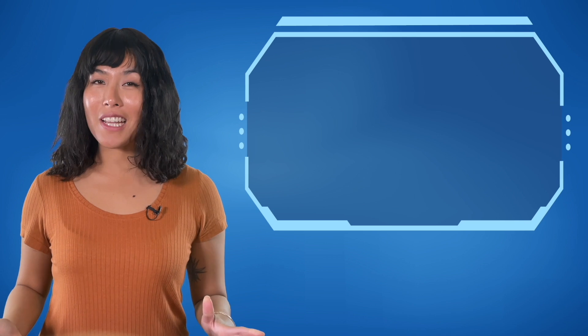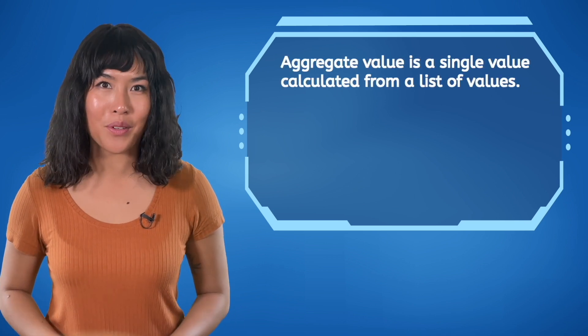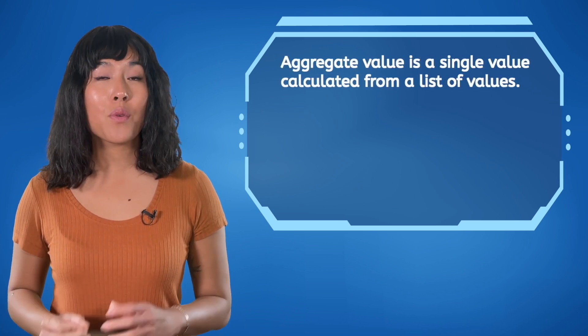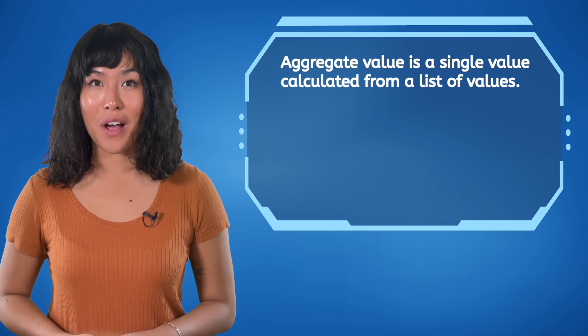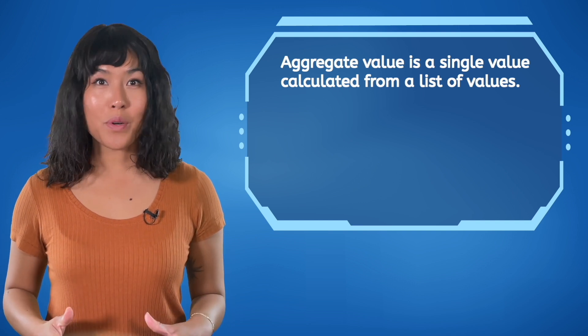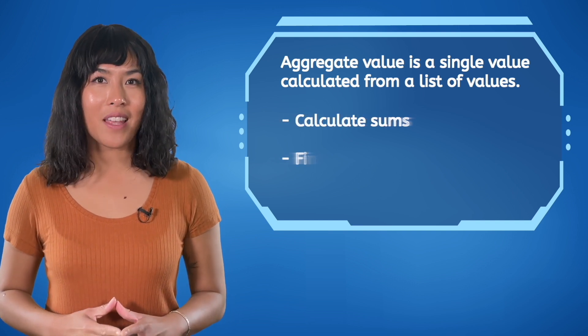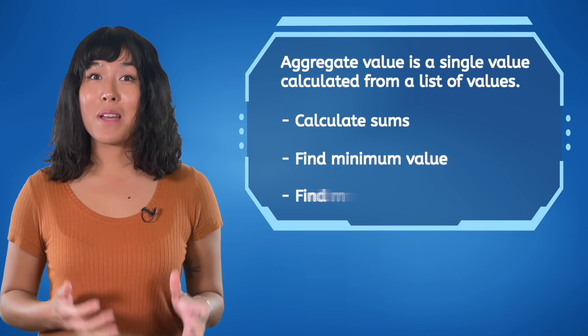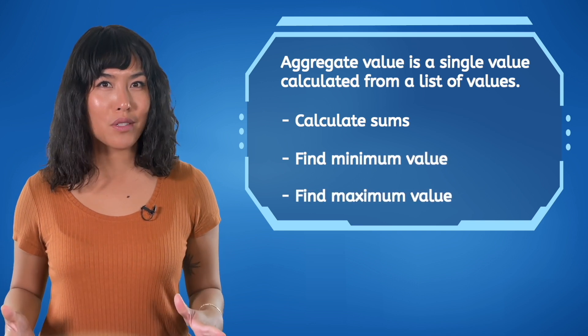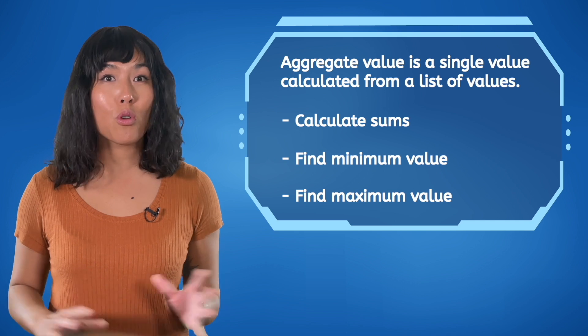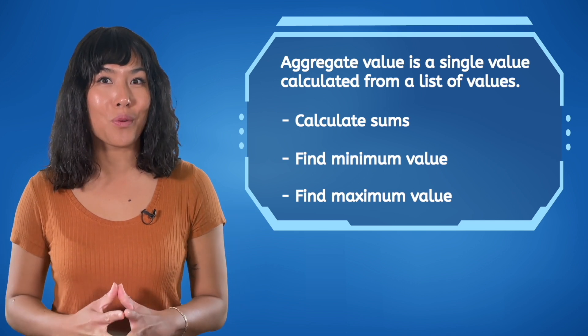Today's journey taught us how to determine an aggregate value, which is a single value calculated from a list of values. For example, we were able to calculate sums, find the average value, and find minimum and maximum values. We've equipped ourselves with essential skills for exploring and interpreting data through programming.